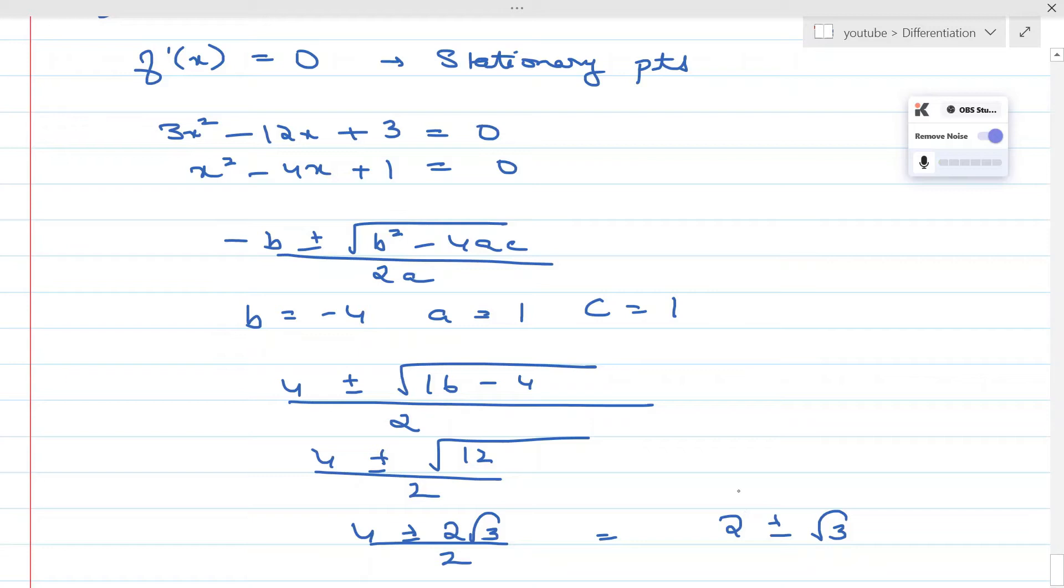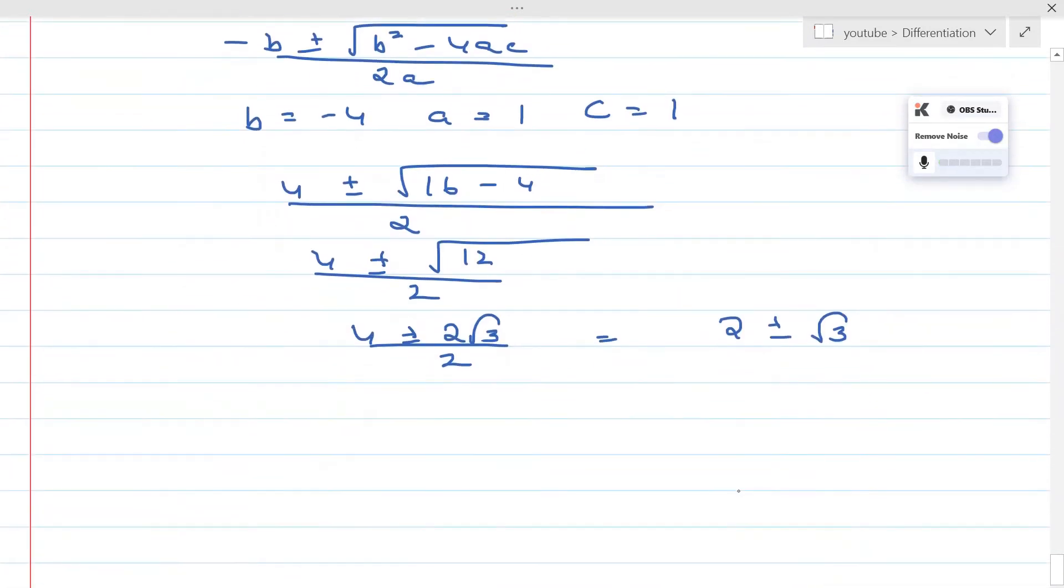Now these are the two stationary points that are defined. Let's draw the sign diagram for this. The first one would be 2 - √3 and then we have 2 + √3.